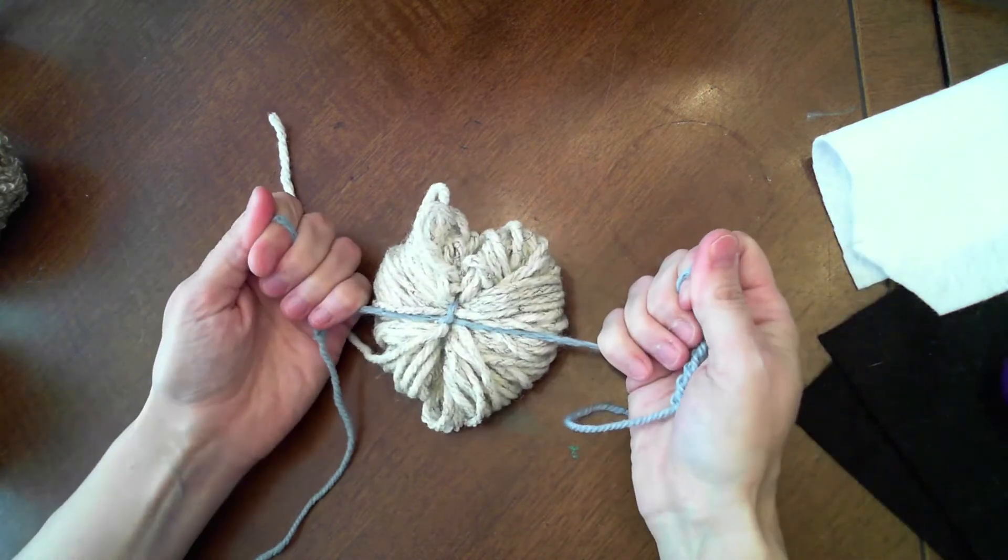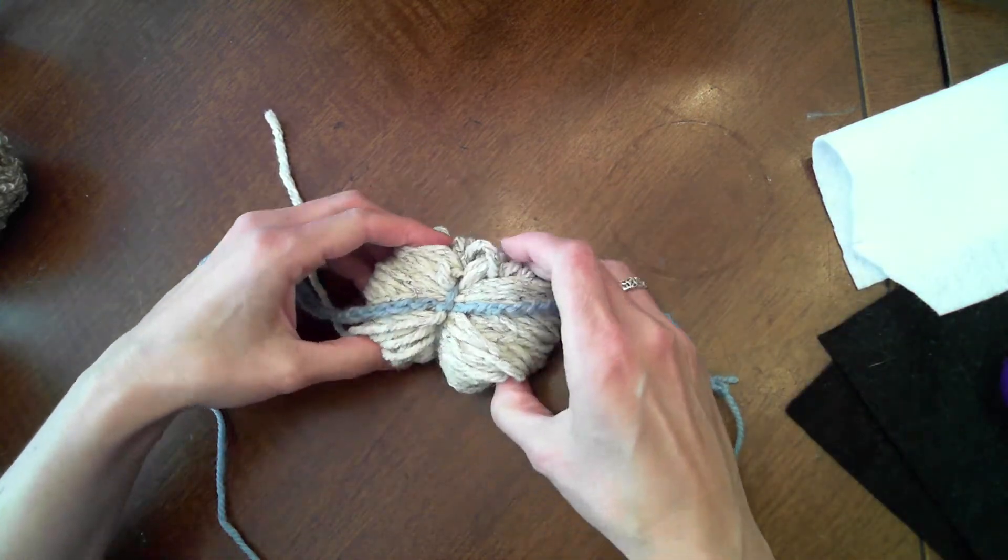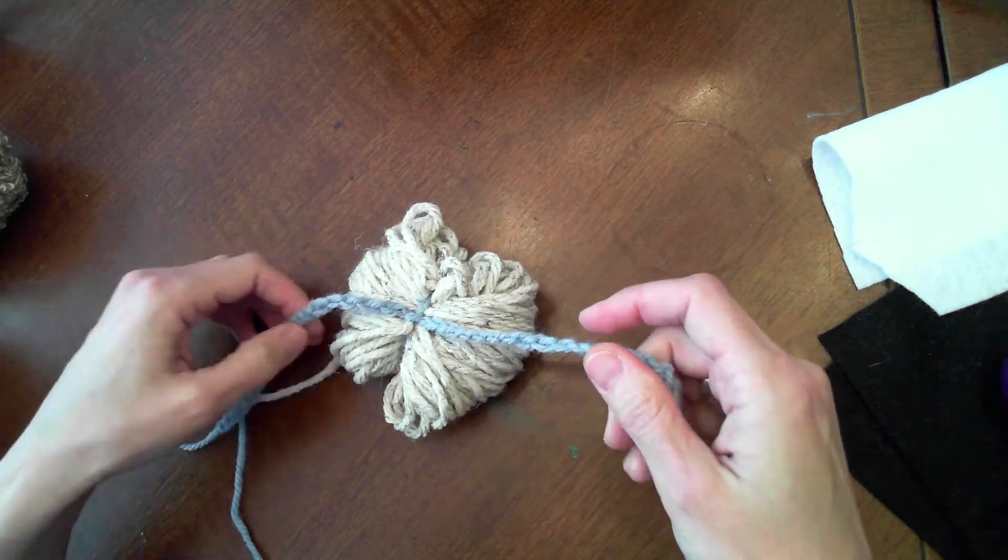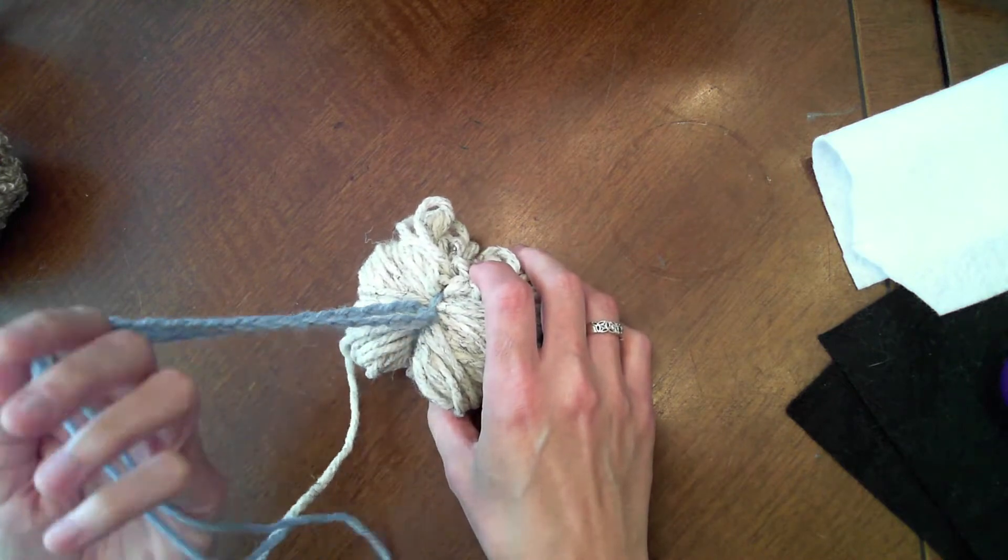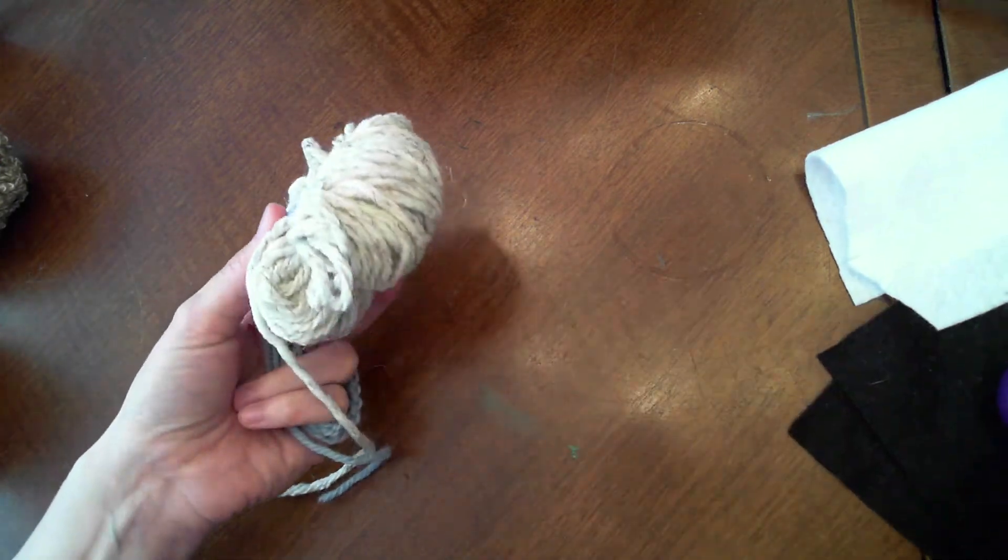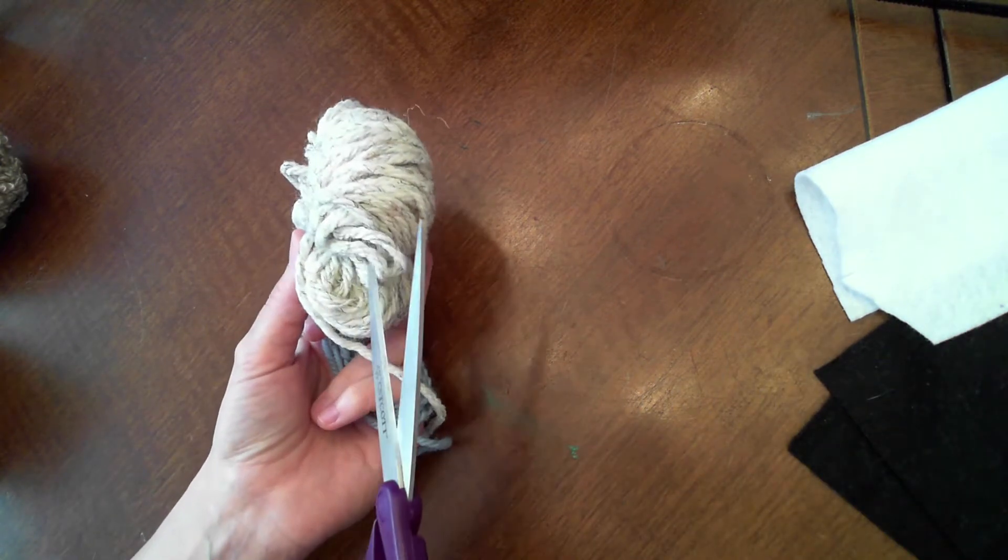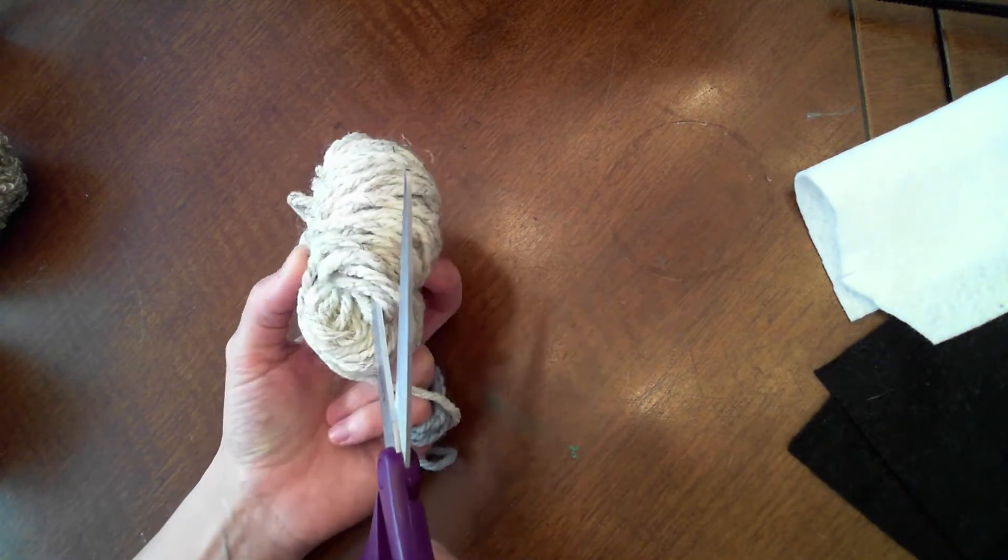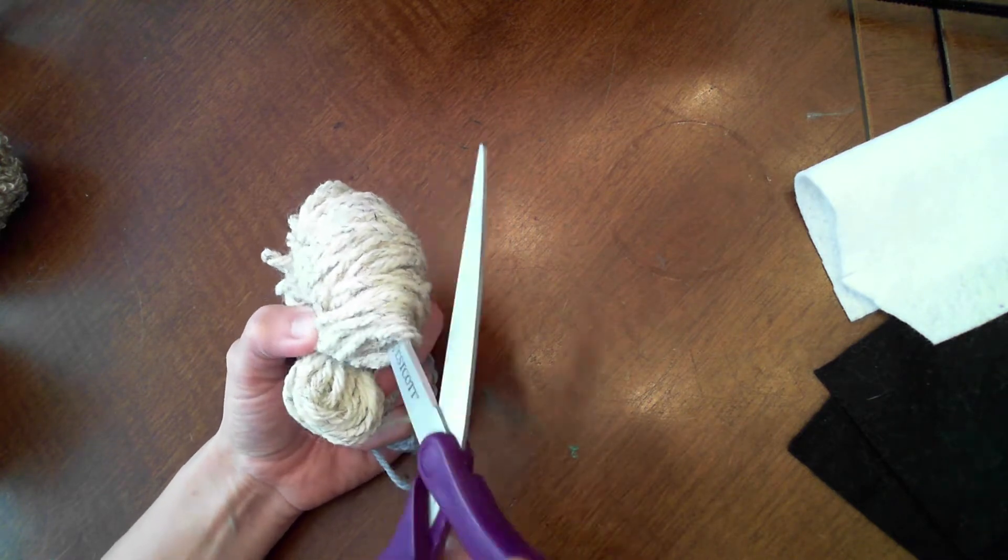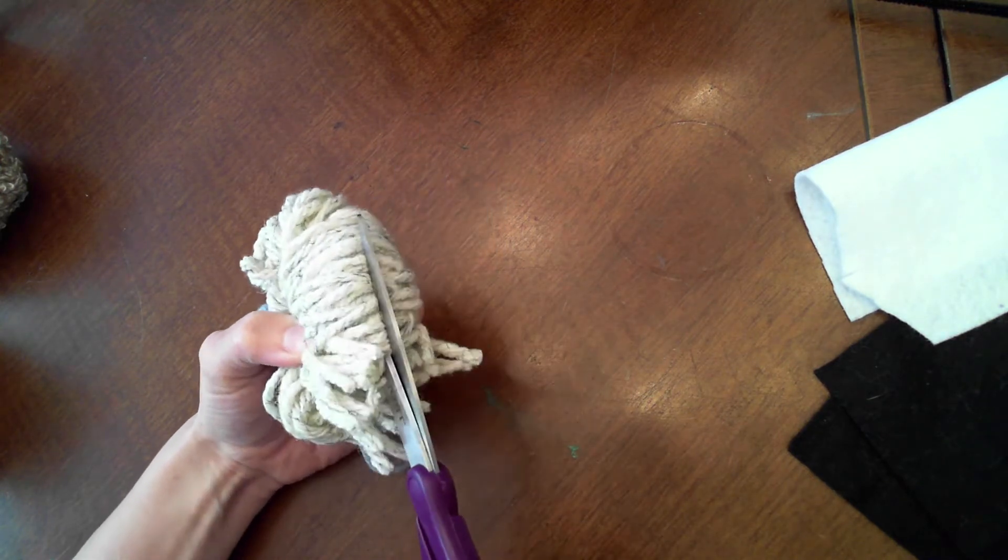Okay, now before I do anything else, I'm going to hold the blue yarn in my hand because I don't want to accidentally cut it with the scissors. Then I am going to put my scissors into those loops and sort of pull up so I'm trying to get to the center of all the loops and I'm going to cut.